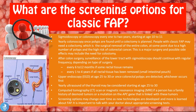People with classic FAP may need a colectomy — surgical removal of the entire colon — due to a high number of polyps and high risk of colorectal cancer. After colon surgery, surveillance of the lower tract with a sigmoidoscope should continue every six to twelve months if some rectal tissue remains, or every one to four years if all rectal tissue has been removed but a small intestinal pouch is present.